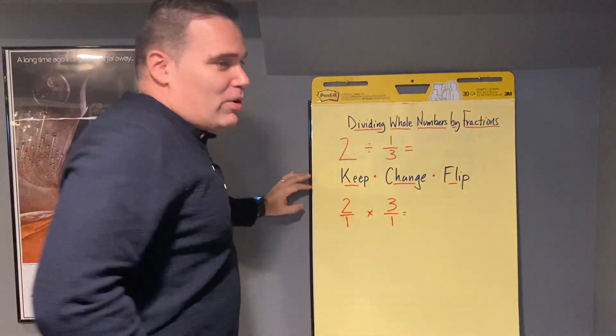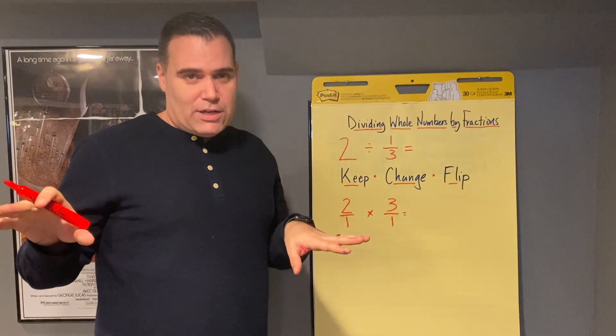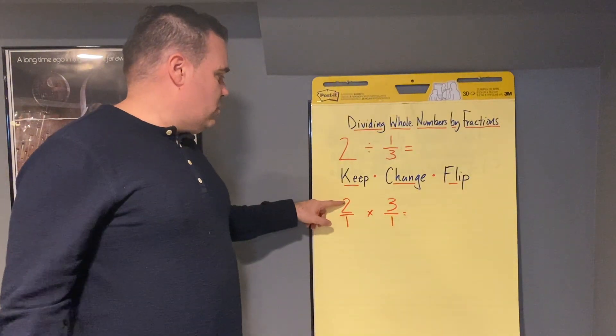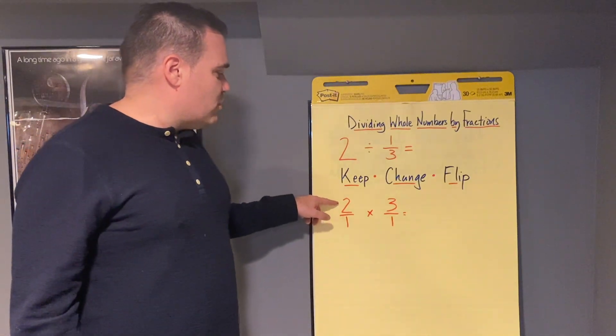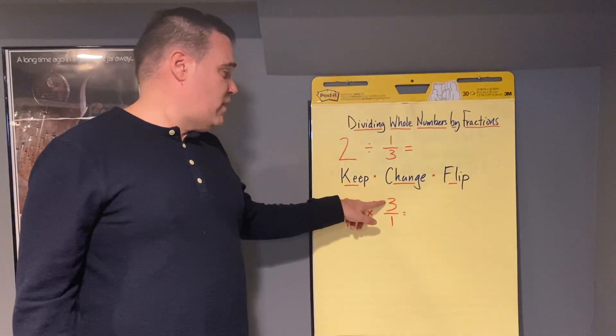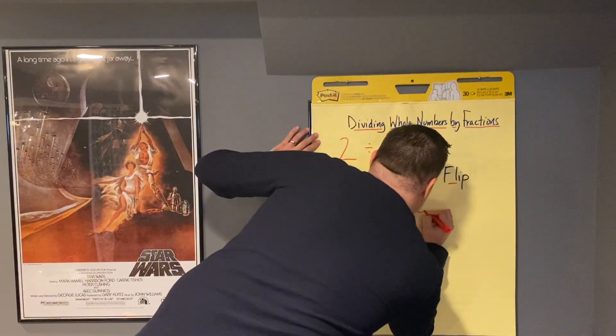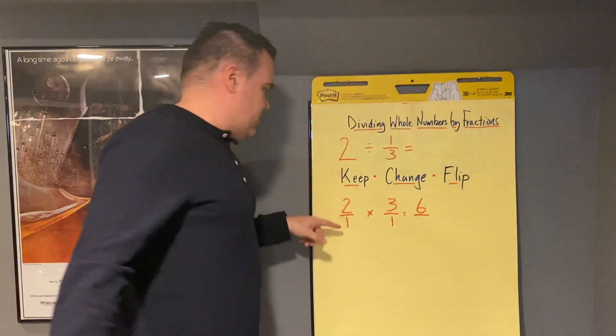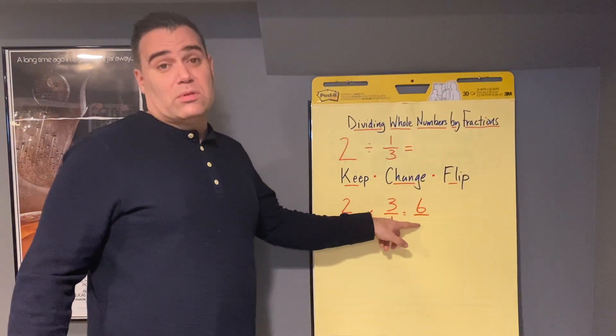So now, it just becomes a very simple fraction multiplication problem. So we're going to do 2 over 1 times 3 over 1. So the way we do that is we multiply the numerator times the numerator. So 2 times 3 equals 6. And then the denominator times the denominator. 1 times 1 equals 1.